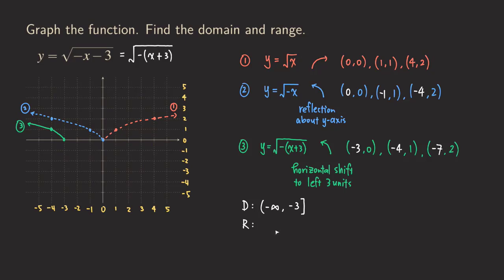What about the range? Because there were no vertical transformations, we are still going to have the same range as the original function — graphs one and three have the same range. So the range starts from zero, including zero, and goes to infinity.